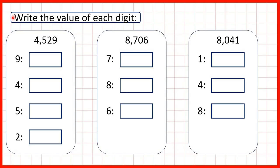We need to write the value of each digit. So first we have the number 4529. Remember, we count place values from the right and we have our ones, tens, hundreds, then our thousands.